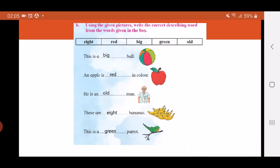And the last one: This is a dash parrot. Look at the color of the parrot. This is a green parrot.